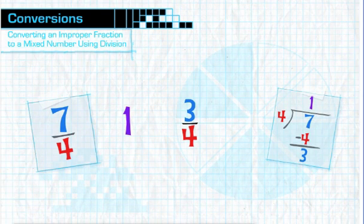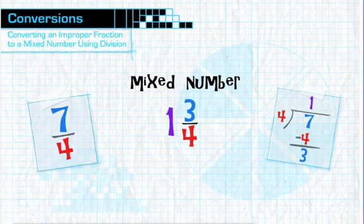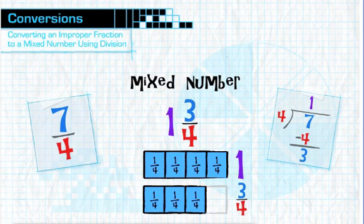Now, all you have to do is put the whole number one with the remaining fraction, and you have the mixed number one and three-fourths. The very same mixed number you got when you used the fraction bar model.